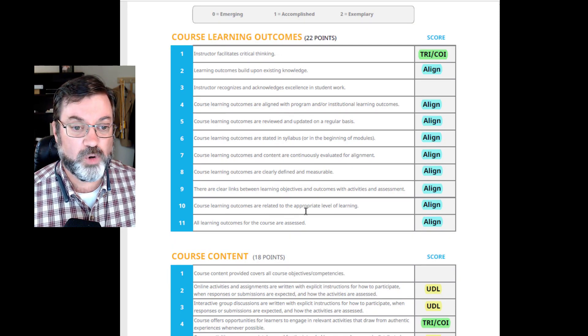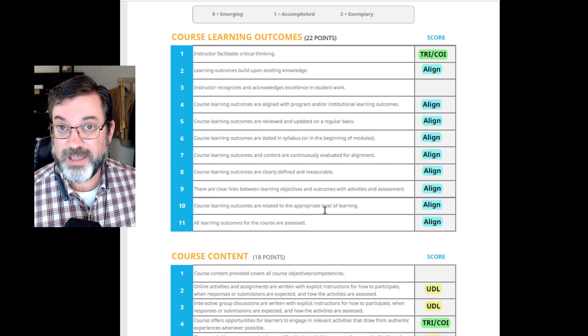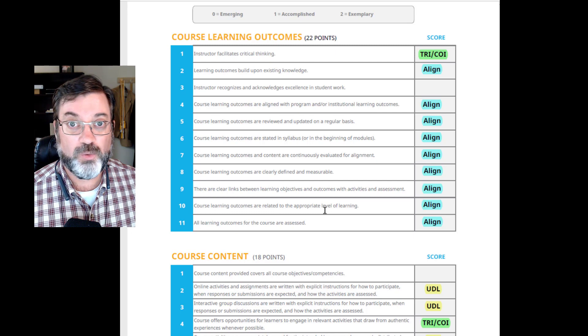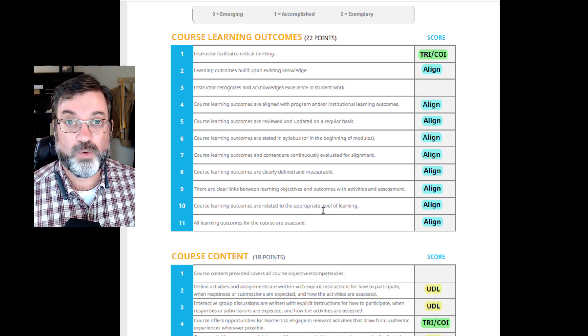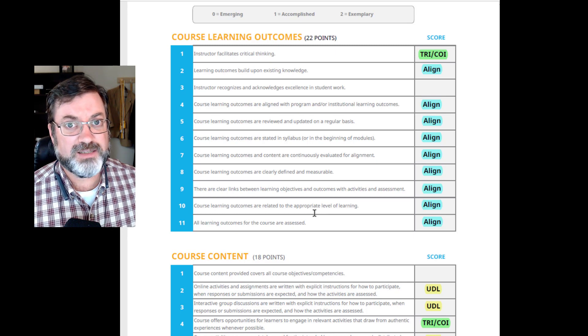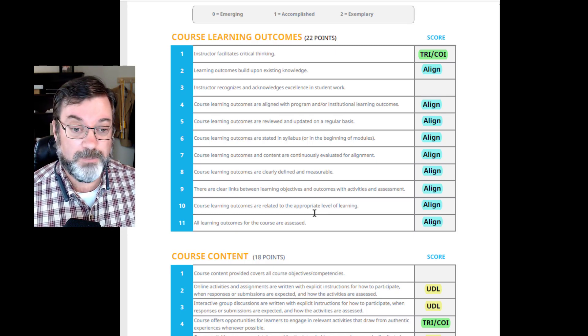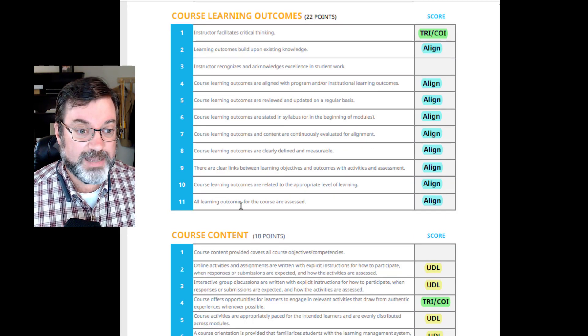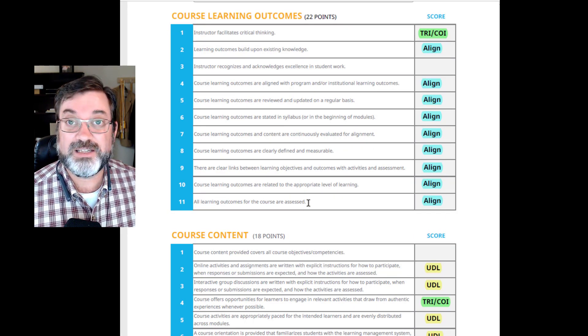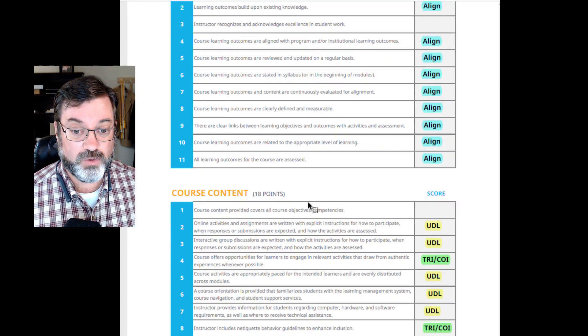Course learning outcomes are related to the appropriate level of learning. That's knowing where in that Bloom's chart you are. You want to be progressing towards the higher order Blooms if you can, but also know that a lot of times you need some of those lower level Blooms to make the upper level Blooms possible. All learning outcomes for the course are assessed to make sure there is some way that you're assessing each and every one of your course learning outcomes.